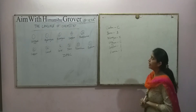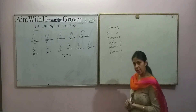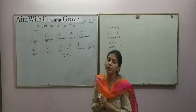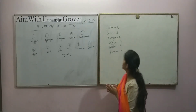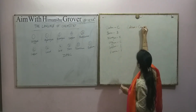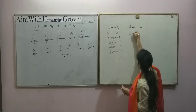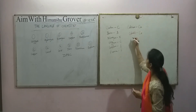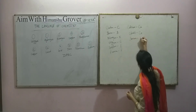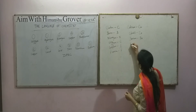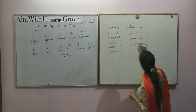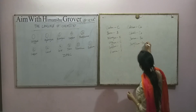The next method is where we represent an element using the first letter and a second letter. For example, calcium is represented as Ca. Cobalt is Co. Barium is Ba. Beryllium is Be, and so on.